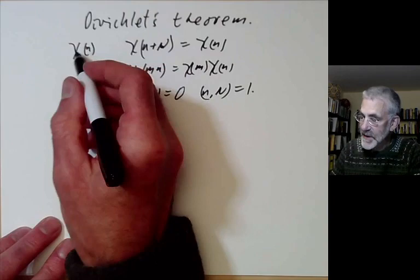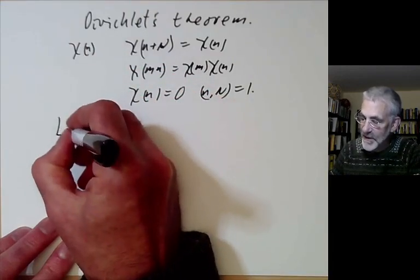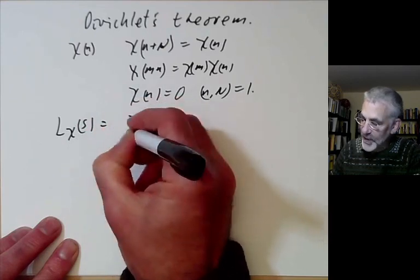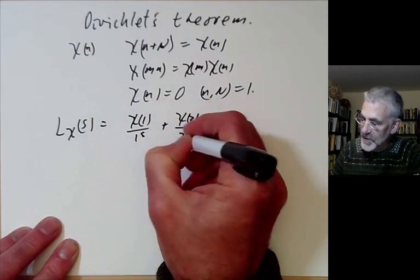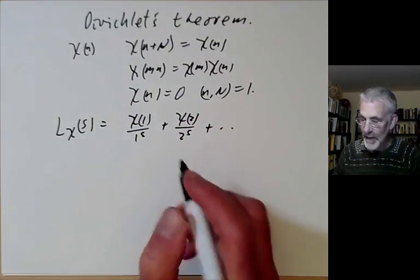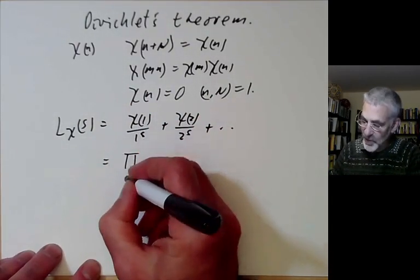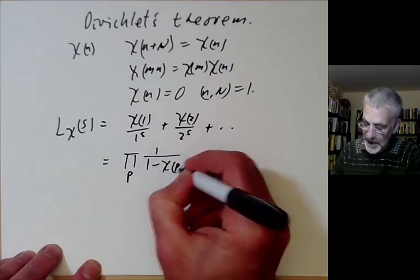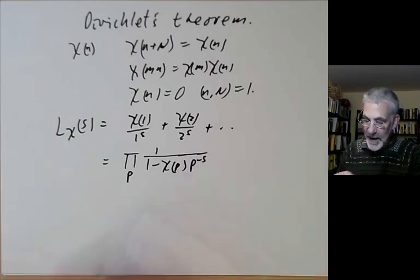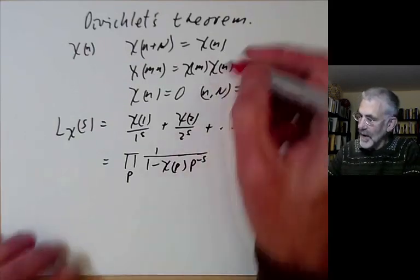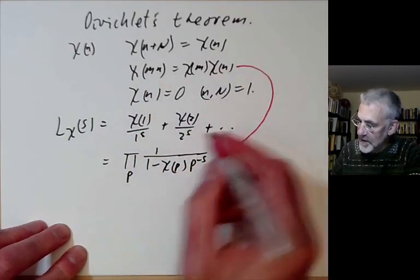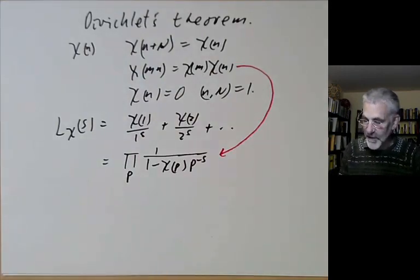To this Dirichlet character we associate the L-series L(chi, s) = chi(1)/1^s + chi(2)/2^s + ... And this has a nice Euler product: the product over all primes of 1/(1 - chi(p) × p^{-s}). The reason it has this Euler product follows from the fact that chi is multiplicative.